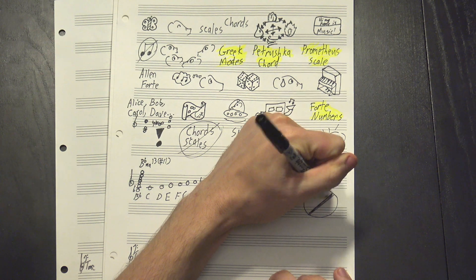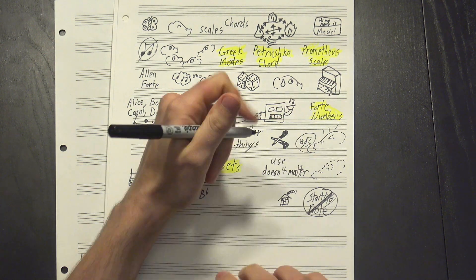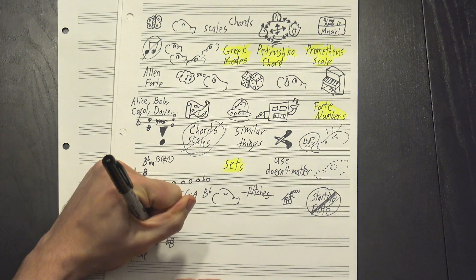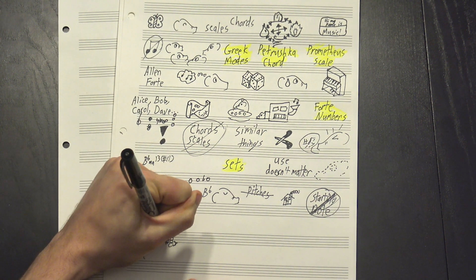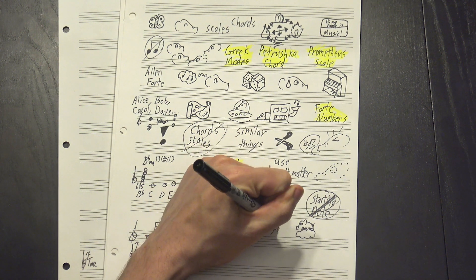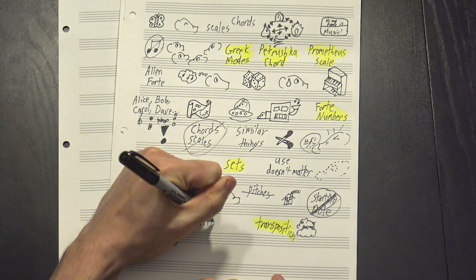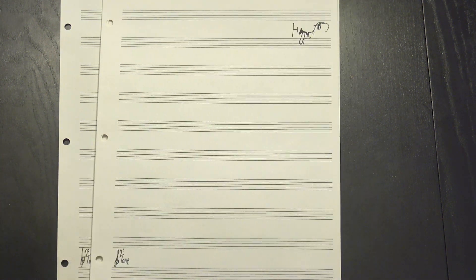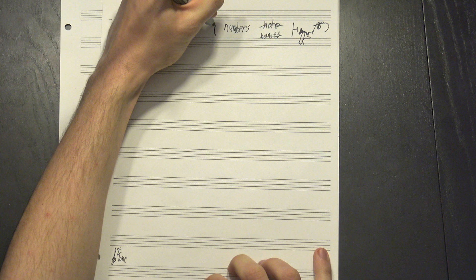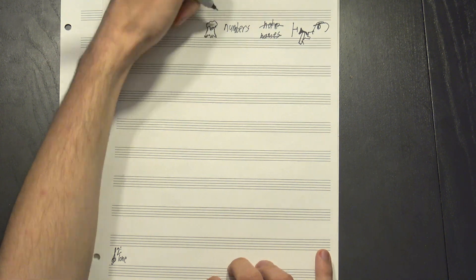The next thing we need to lose is the idea of a starting note. When we're talking about structures, specific pitches don't really matter. A D major triad and an E major triad have exactly the same shape, it's just that the second one sits a little higher. We call this a transposition, and for our purposes, it's irrelevant. In order to facilitate that, we don't actually use note names here.